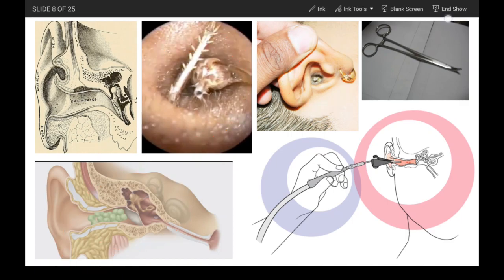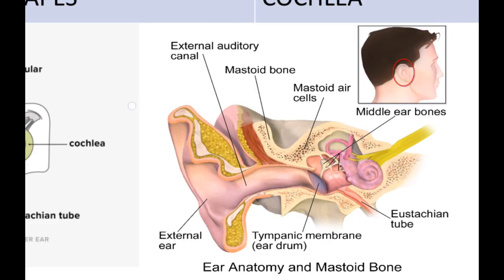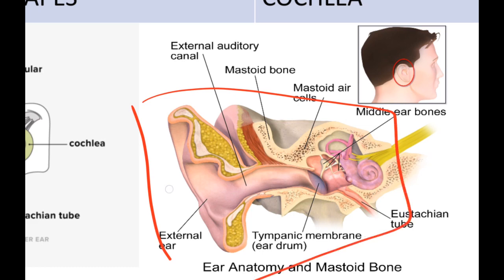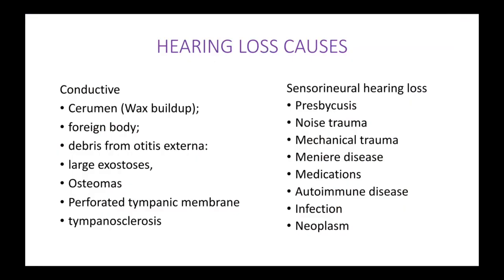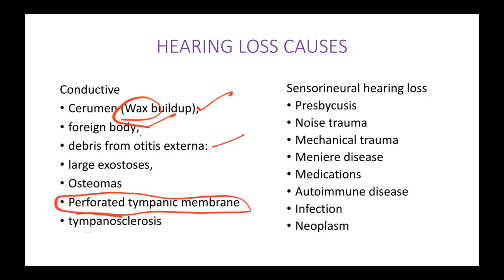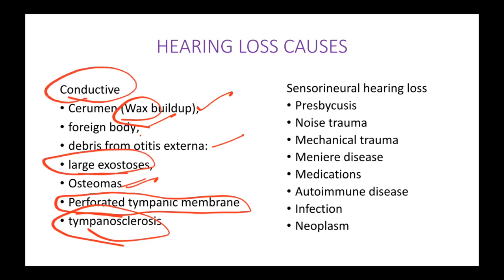Any infection in any part of the ear — such as otitis externa or otitis media — can also cause conductive hearing loss. Other conditions include tympanosclerosis and otosclerosis. To summarize: cerumen, wax, foreign bodies, otitis externa, perforated tympanic membrane, tympanosclerosis, osteoma (bone tumors in the ear), and large exostosis all lead to conductive hearing loss.